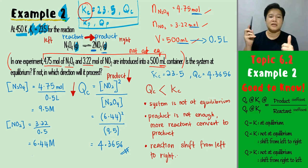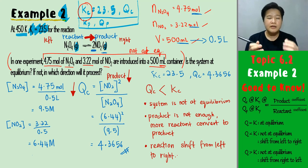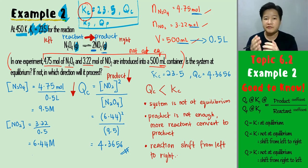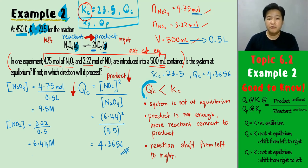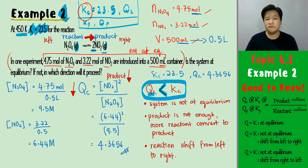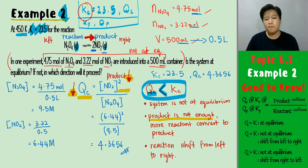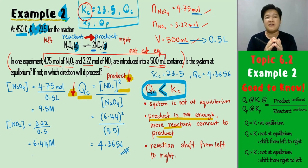To summarize the approach: ensure values given are not at equilibrium before substituting into Q. Always compare Qc with Kc, or Qp with Kp. Start comparing from Q — if Q is lower, product is insufficient and more reactant must convert to product, so the reaction shifts left to right.